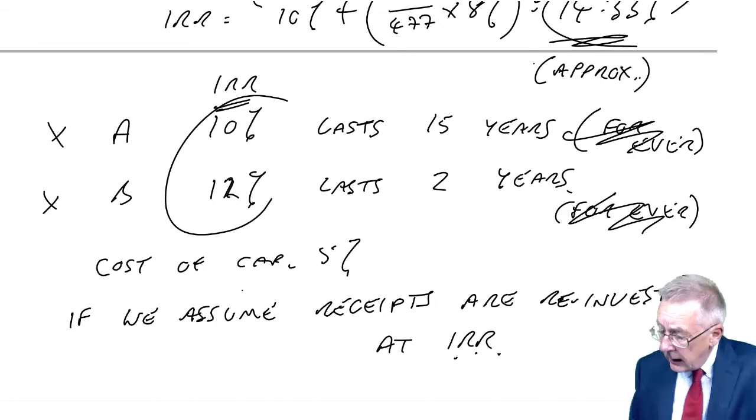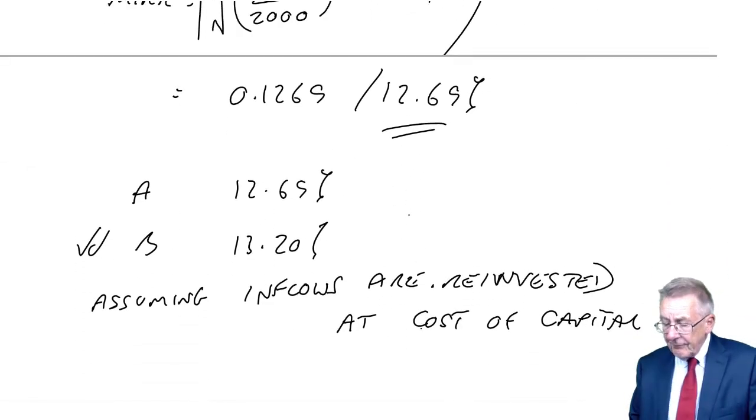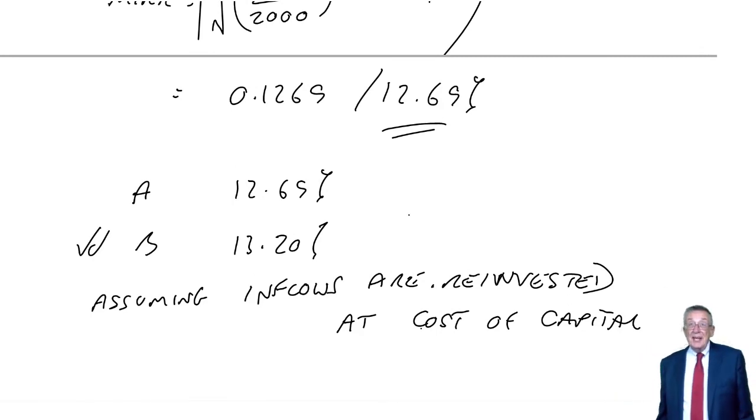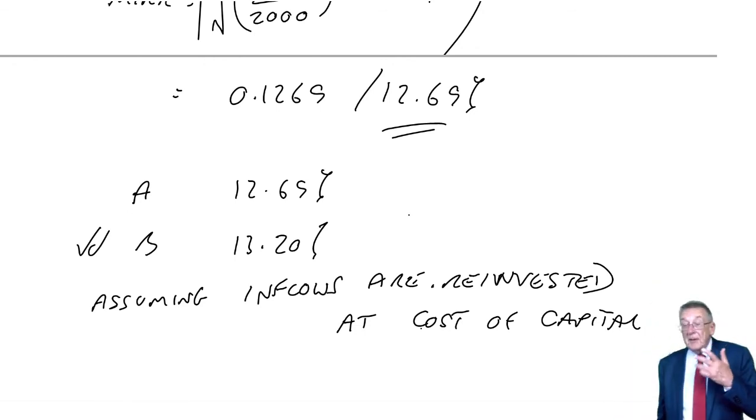With MIRR, it's perhaps more logical in that since money's costing you 10%, you could effectively always reinvest at 10% because you could use the money to repay borrowing and save at 10%.